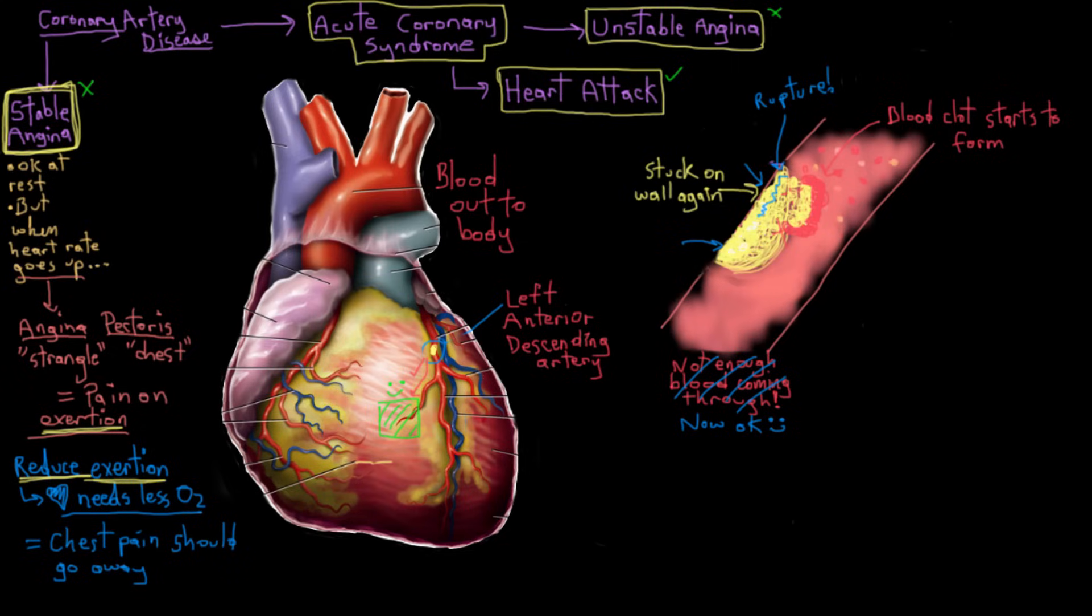Remember what we said earlier. When you deprive downstream parts of the heart of blood, you start to get that hypoxia happening, and you start to get that chest pain, that angina happening.